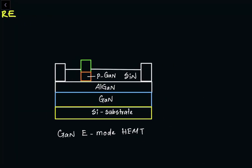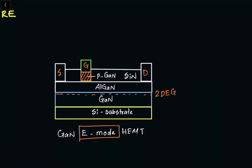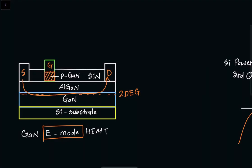The GaN E-mode HEMT — E-mode meaning enhancement mode — has a source, a drain, and a gate terminal. Underneath the gate there is a p-type GaN cap layer. This p-type GaN layer makes it E-mode, meaning there is no channel formed when no gate bias is applied. There are depletion mode as well as enhancement mode devices; we'll focus on enhancement mode today. Underneath the AlGaN and GaN layers there is a two-dimensional sheet of electrons called the 2DEG, or two-dimensional electron gas, which is controlled by the gate terminal. You either deplete or connect the 2DEG — when connected, electron flow from source to drain allows current to flow. As already noted, there is no PIN junction diode or PIN body diode to carry the third quadrant operation.